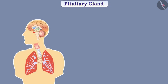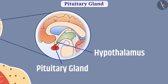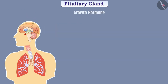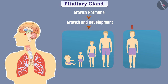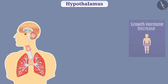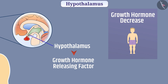The pituitary gland is present below the hypothalamus in the forebrain. It secretes various hormones, such as growth hormone, which controls the growth and development of the body. If the secretion of growth hormone is high during childhood, there is abnormal growth called gigantism. If the secretion is less during childhood, growth is blocked and height does not increase, which is called dwarfism. When the level of growth hormone decreases, the hypothalamus secretes a growth hormone releasing factor, causing the pituitary gland to secrete growth hormone.